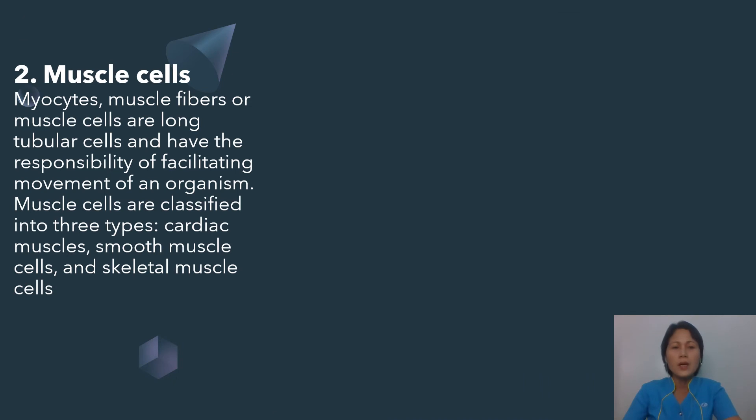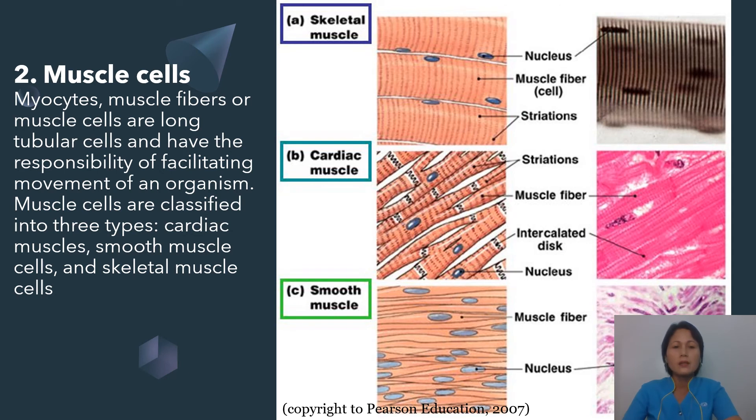We also have muscle cells. Myocytes, muscle fibers, or muscle cells, are long tubular cells and have the responsibility of facilitating movement of an organism. Muscle cells are classified into three types: cardiac muscle cells, smooth muscle cells, and skeletal muscle cells. Skeletal muscles are striated and has voluntary function. Smooth muscles are non-striated and has involuntary function. Cardiac muscles are striated and has involuntary function.